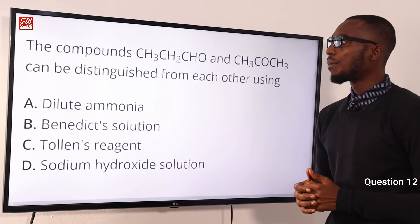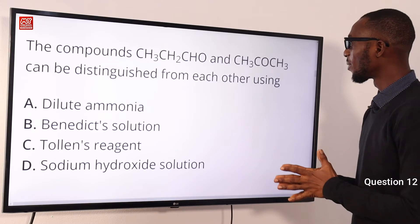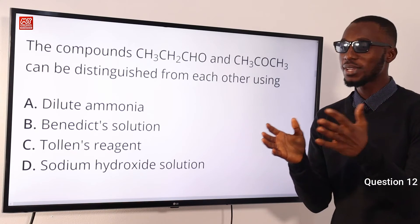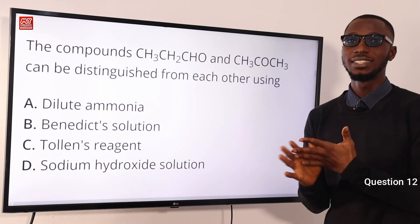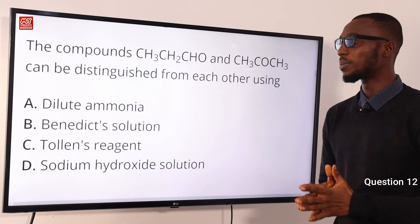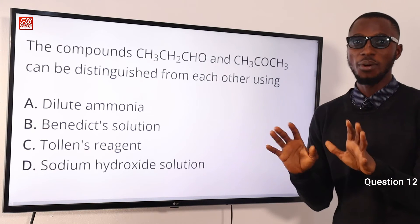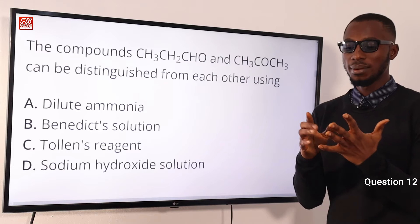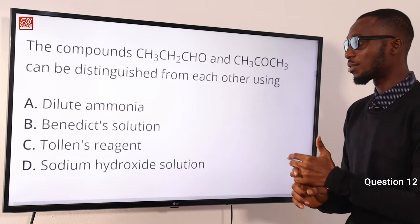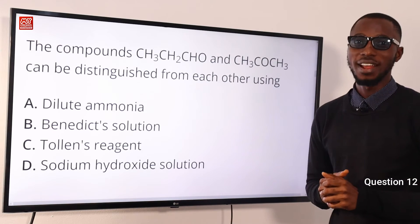Question 12. The compounds CH3CH2CHO and CH3COCH3 can be distinguished from each other using what? You can identify these compounds as alkanals and alkanones — aldehydes and ketones. Part of the reactions we use to distinguish these compounds is a reaction with Fehling's solution and a reaction with Tollen's reagent. So the correct option is option C, Tollen's reagent.